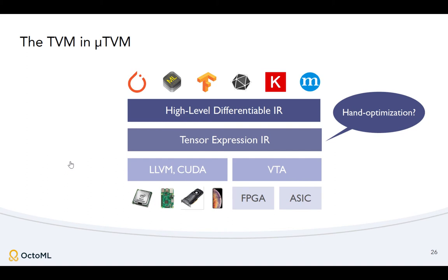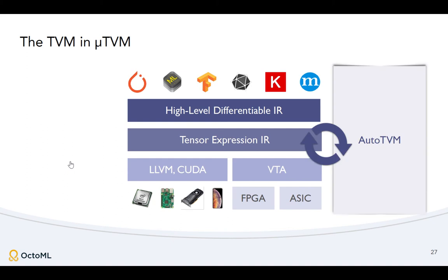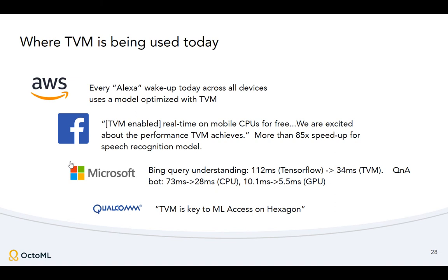You might notice that these high-level operators are somehow getting mapped down to a tensor expression IR, and then somehow that gets mapped down to LLVM — and you sense some hand optimization there. This is where AutoTVM comes in. AutoTVM uses machine learning-guided search to greatly alleviate the need for hand-tuning and handwriting these kernels.